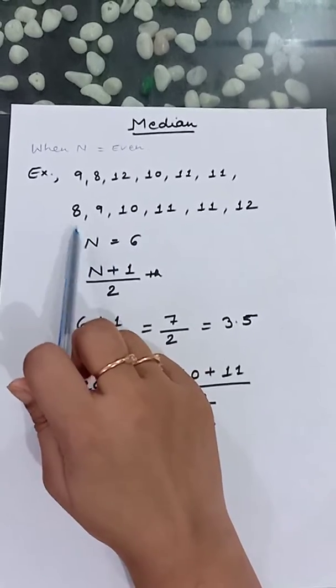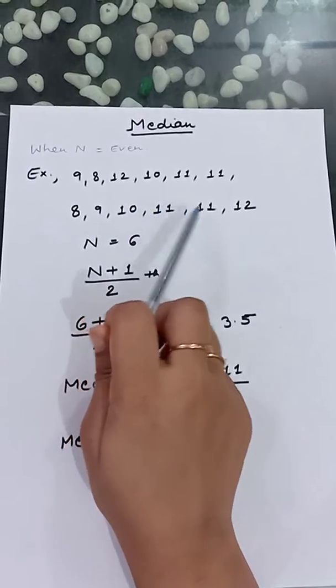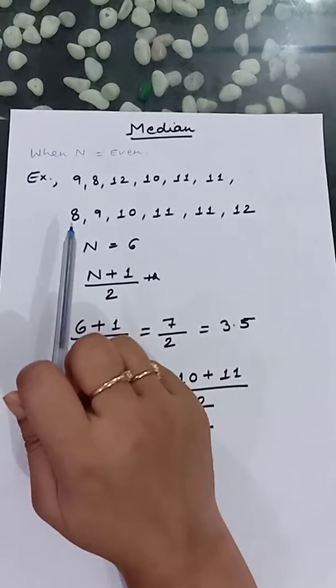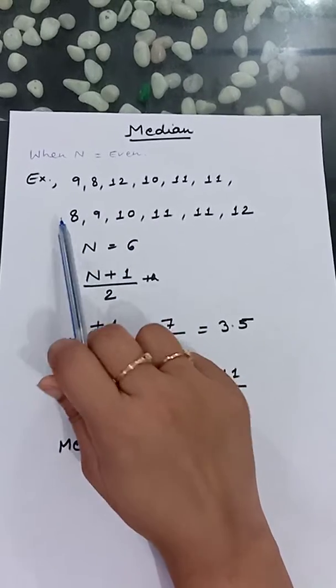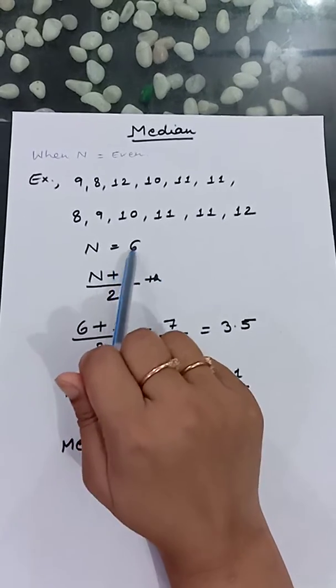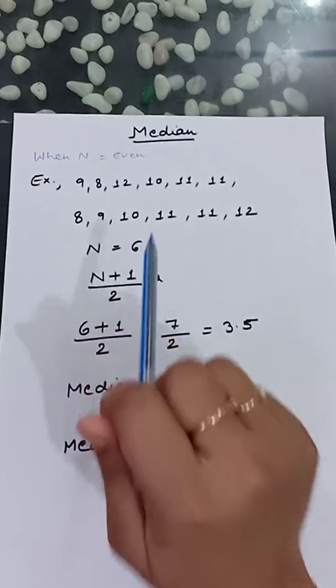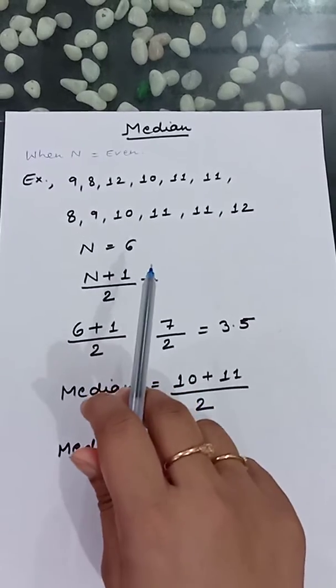In ascending order: 8, 9, 10, 11, 11, and 12. So total number of n is 6: 1, 2, 3, 4, 5, 6. This is an even number, so in this session we will see how to compute median when our given n is even.